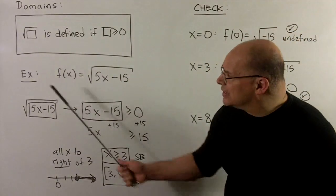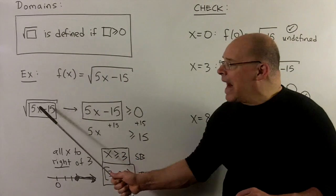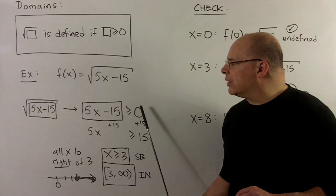For instance, in this example, I'll note 5x minus 15 is in the box, so I take the box out, set greater than or equal to zero.